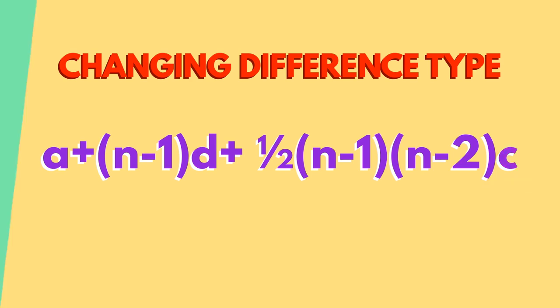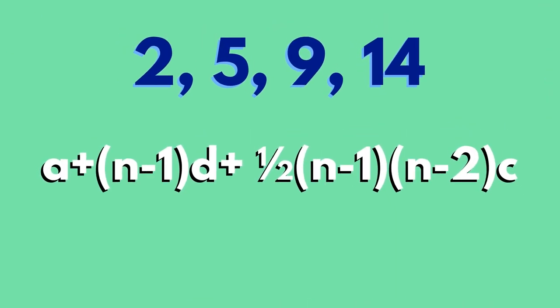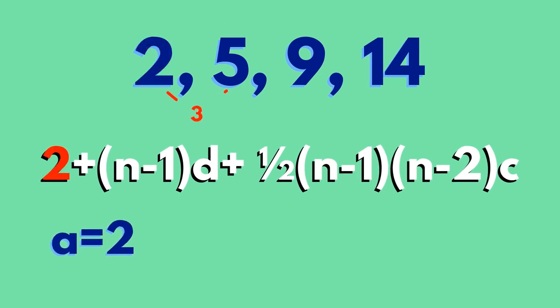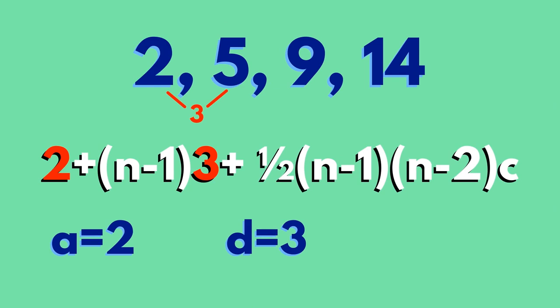Can you find the nth term of this sequence? The first term is 2, so A equals 2. The first difference is 3, so D equals 3. The differences increase by 1 each time, so C equals plus 1.